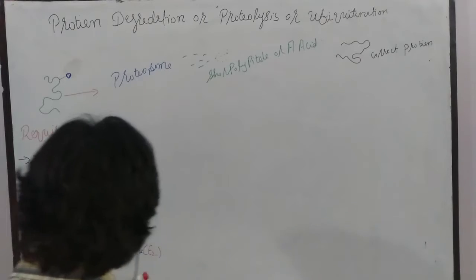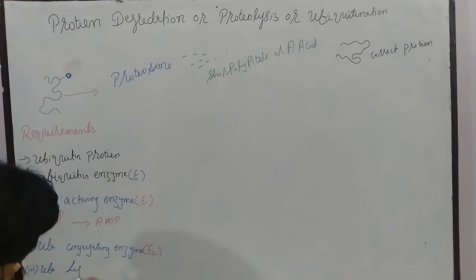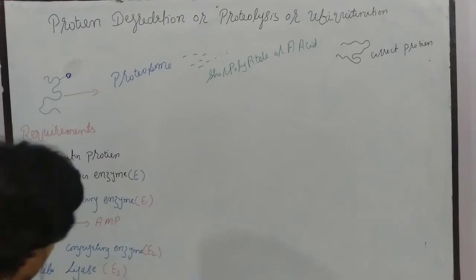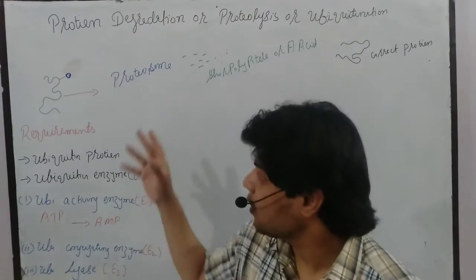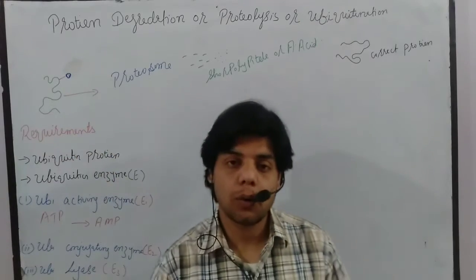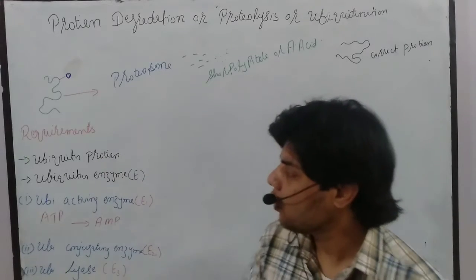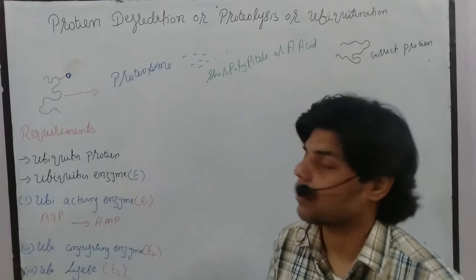The third enzyme required is ubiquitin ligase, denoted as E3. This enzyme transfers the ubiquitin-tagged target protein to the proteasome for degradation. These three enzymes — E1, E2, and E3 — are the requirements that the cell needs for proteolysis or protein degradation.